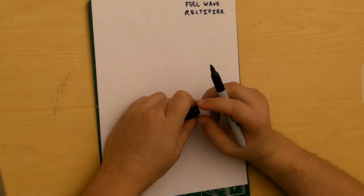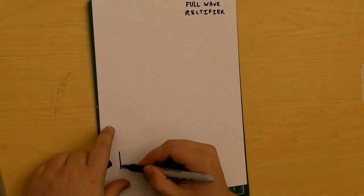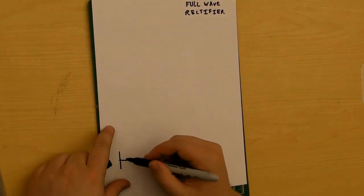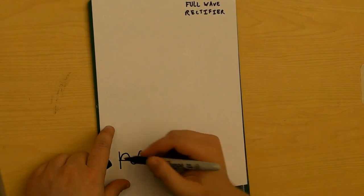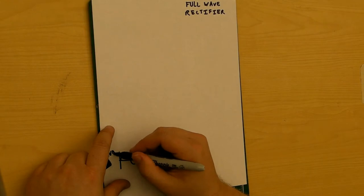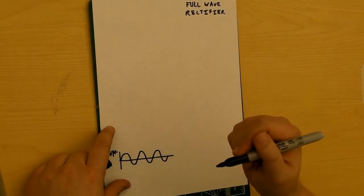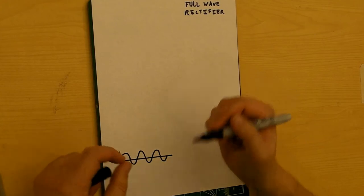Now if you remember from before, AC voltage looks like this. The sine wave goes up and down. And today we're going to talk about a 12 volt AC source. We'll use that later on. But what we want to do is convert that to a DC power supply.